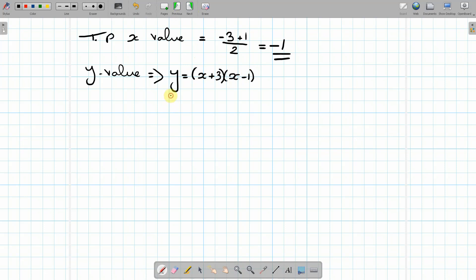So if we substitute in the value of x, which is minus 1, so it's going to be (minus 1 plus 3)(minus 1 minus 1). And that will give us a value of 2 times minus 2. So y equals minus 4. So the coordinates of the turning point is going to be (minus 1, minus 4).